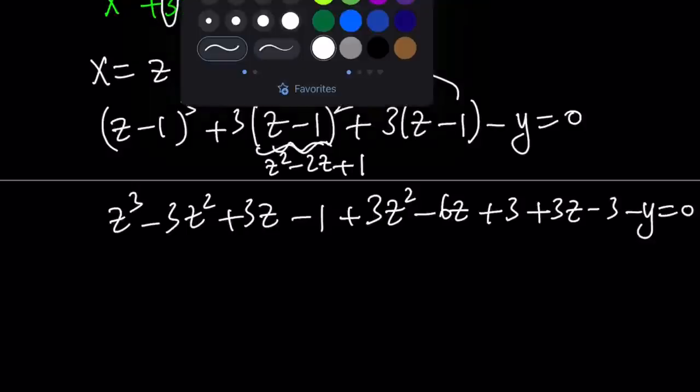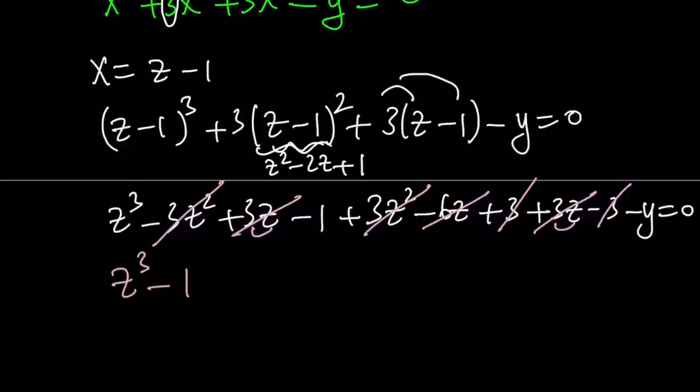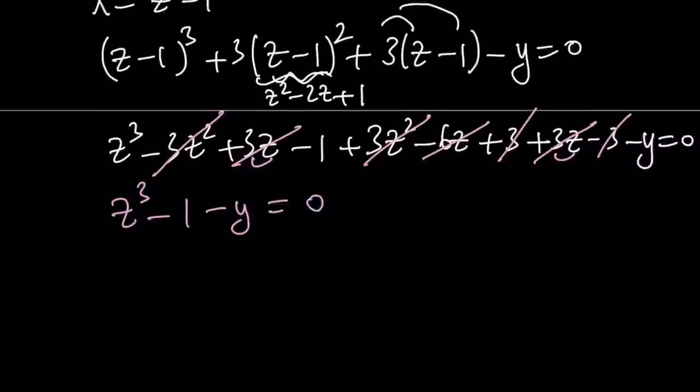Now notice that some of the terms cancel out. Actually quite a few terms cancel out. So it's kind of nice. For example z squared cancels out. That should always cancel out because that's the goal. 3z plus 3z is 6z and that cancels out with negative 6z which is cool. And the 3 minus 3 is also 0. So that's really nice because now you get z cubed minus 1 minus y equals 0 which can be written as z cubed equals y plus 1.